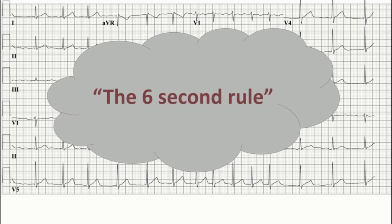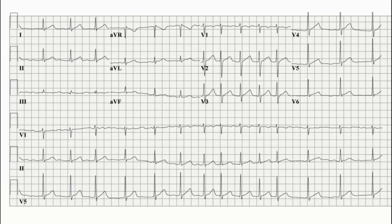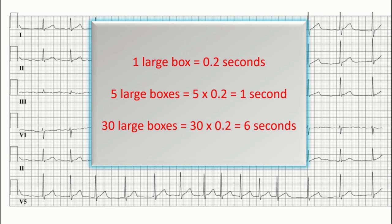The 6-second rule is based on the principle that we first calculate the heart beats in 6 seconds on the ECG and multiply by 10 to give the heart rate in 60 seconds, that is in 1 minute. For this method, just remember a rule of thumb: in an ECG, one large box is equivalent to 0.2 seconds. So 5 large boxes are equivalent to 1 second, and 30 large boxes will be equal to 6 seconds.